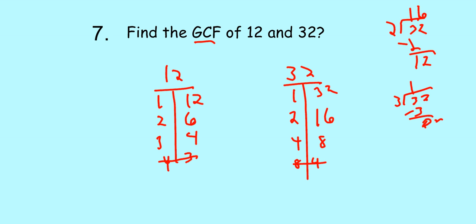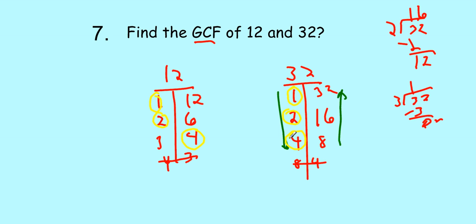You can put them in order easily using the factor T — go down one side and up the other. Now we look for common factors — the numbers that both lists share. One is a common factor of all numbers. Two is a common factor. And four is a common factor. Those are the three common factors. Not all numbers share three common factors — some only share 1. The largest of 1, 2, and 4 is 4. So the GCF — the greatest common factor — is equal to 4. That is your answer for number seven.